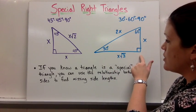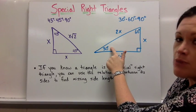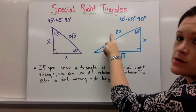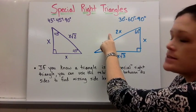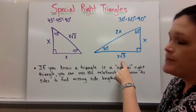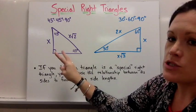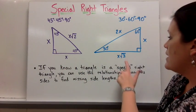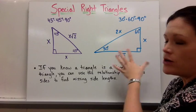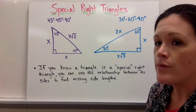For the 30-60-90 triangle, the sides have a different relationship. The side across from the smallest angle is the smallest side, so that's x. The hypotenuse is two times the smallest side, so that's 2x. The side across from the 60-degree angle is x times the square root of 3. A memory tip: the square root of 2 goes with the triangle that has two congruent angles, and the square root of 3 goes with the one that has a 30-degree angle — the 3's go together.